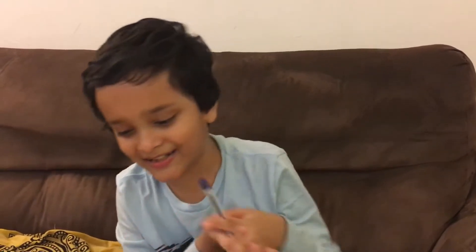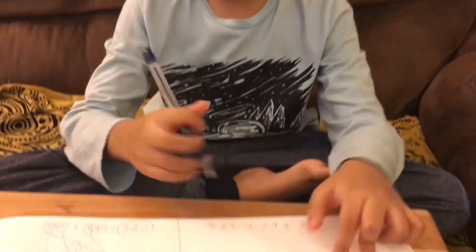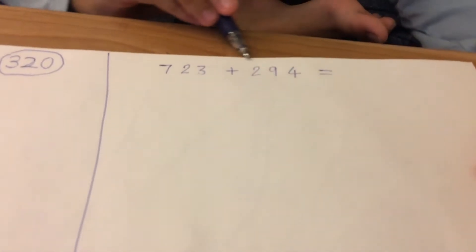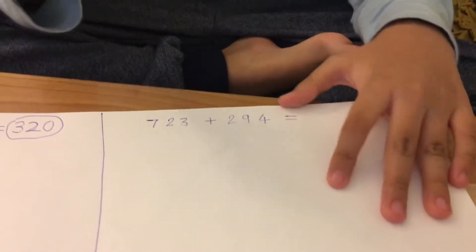See you there. So now it's time for the second challenge, smart kids. 723 plus 294. Let's get into it.